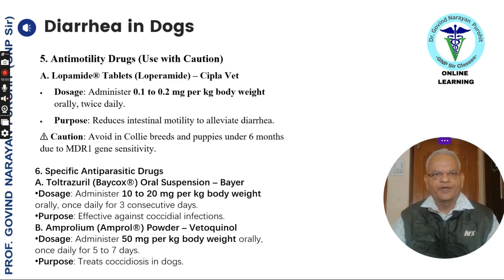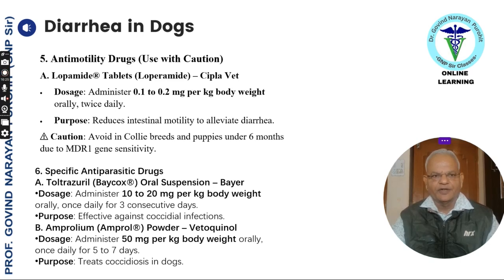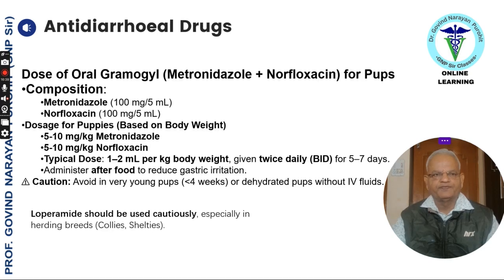Loperamide can be given 1 to 2 grams per kg body weight orally twice daily — it reduces intestinal motility. However, it should be used with care in Collie breeds and puppies under 6 months due to MDR1 gene sensitivity. Specific anti-parasitic drugs include toltrazuril 10 to 20 mg per kg body weight, amprolium, or bithionol if coccidiosis is suspected — 50 mg per kg body weight orally once daily for 5 to 7 days. This treats coccidiosis in dogs.